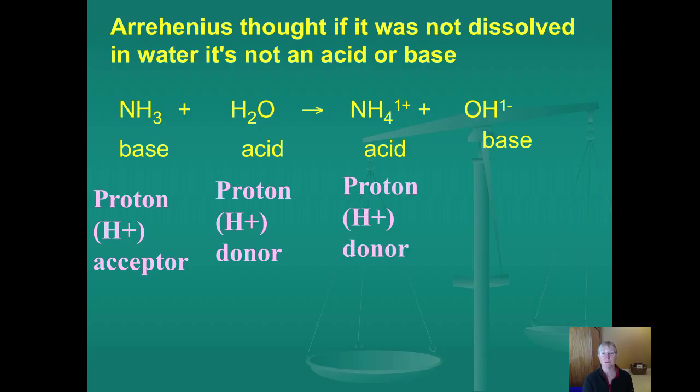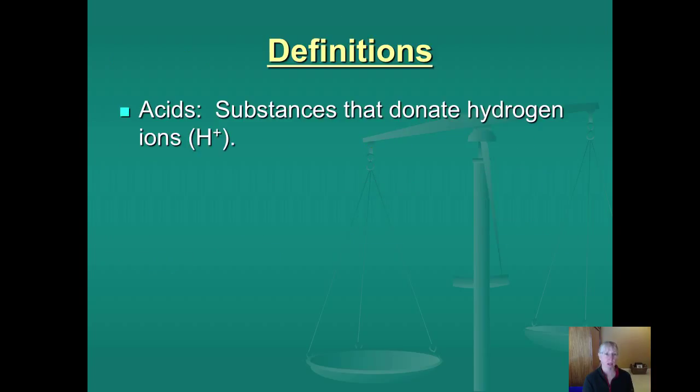So the proton acceptor is the base. The proton donor is the acid. Okay, now this is our better definition of a Bronsted-Lowry acid. It's a substance that donates hydrogen ions. And a Bronsted-Lowry base is a substance that accepts them.